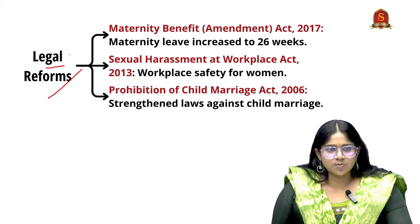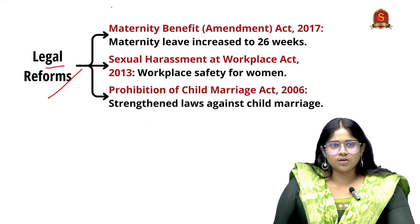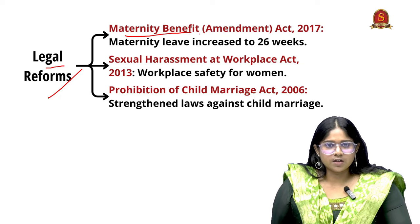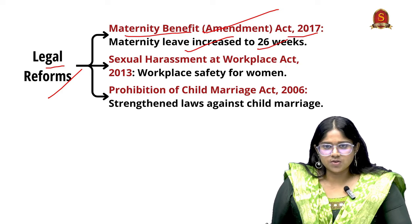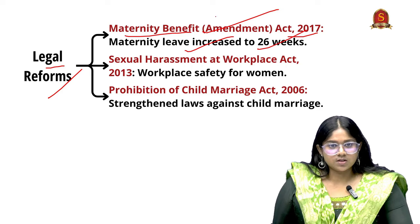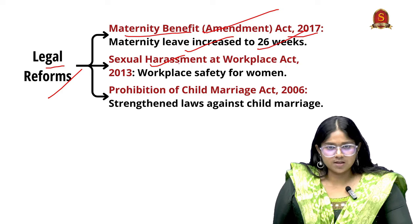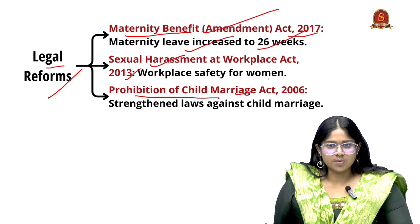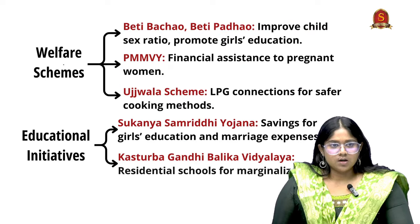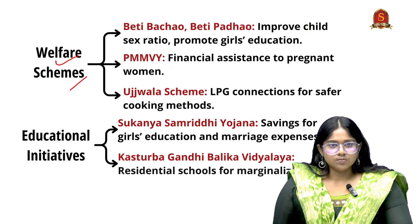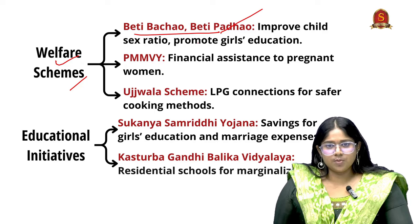Now let us see legal reforms associated with social justice for women. First is the Maternity Benefit Amendment Act of 2017, where maternity leave has been increased to 26 weeks. Next is the Sexual Harassment at Workplace Act of 2013 and the Prohibition of Child Marriage Act of 2006. Looking at welfare schemes — Beti Bachao Beti Padhao helps to improve the child sex ratio and promote girls' education.